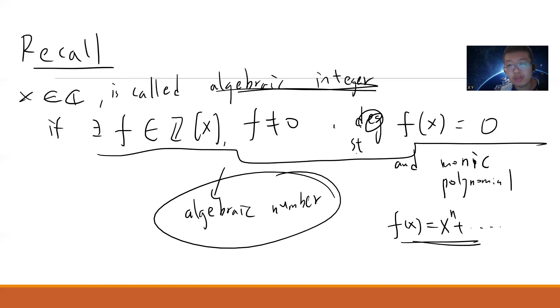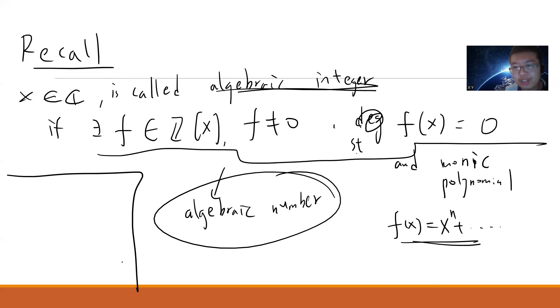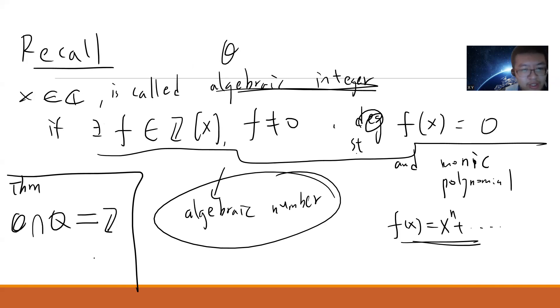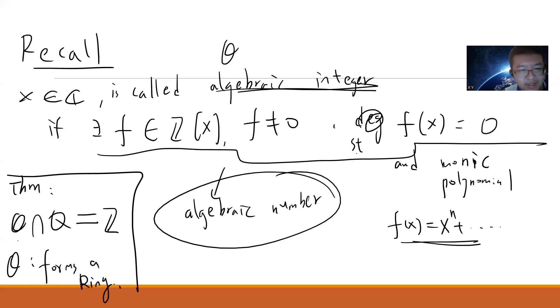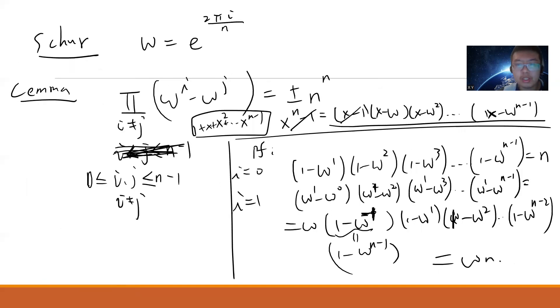This kind of theory is called algebraic number theory. There is a very simple fact: if I define O to be all algebraic integers, then O ∩ ℚ = ℤ. Simply speaking, any rational number which is an algebraic integer must be an integer. Also, algebraic integers form a ring. These two facts are the key ones we will use.